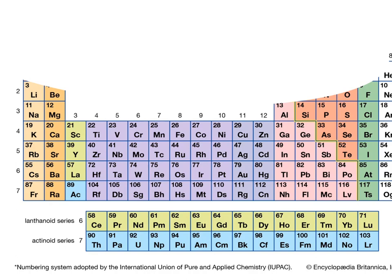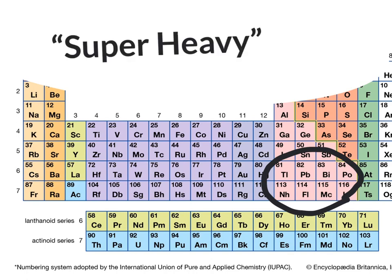Deep in the periodic table, there exists a region where the generally unstable, so-called super-heavy elements that tend to last for just a second or less before radioactive decay tend to become more stable. Scientists have named this long hypothesized region the island of stability.